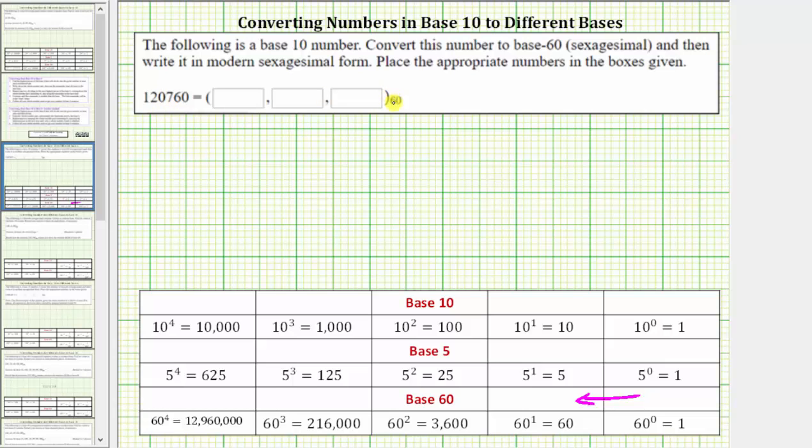Notice in this case, the highest power of 60 that will divide the given number at least once is 60 squared or 3,600. We know this because 60 to the third or 216,000 is greater than the given number in base 10.